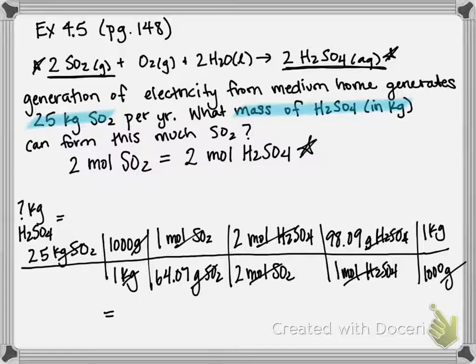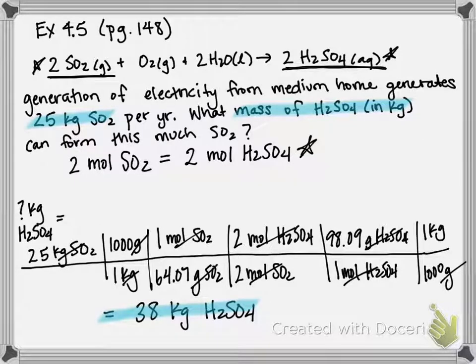If you multiply all the way across, and then divide that by the numbers on the bottom, you should get about 38 kilograms of H2SO4. So that is the amount of sulfuric acid you can produce from the given quantity of 25 kilograms of SO2.